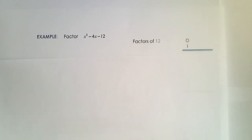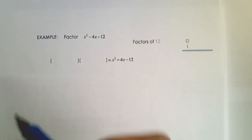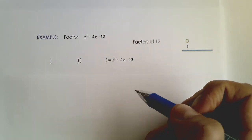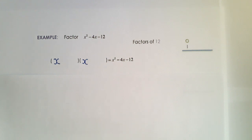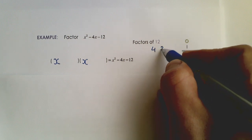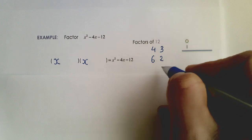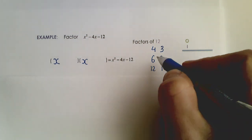Let's try another example. Pause the video and try to factor this expression as a product of two binomials, then restart to compare. Following the same process as before: the first term is x squared, so the only factors are 1 times 1, giving x times x. For the last term, which is 12, I list factors starting with the closest: 4 and 3, then 6 and 2, then 12 and 1. I'll choose 4 and 3 first.